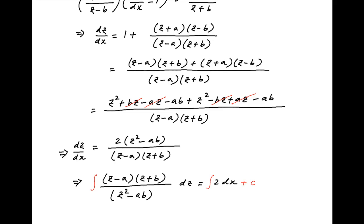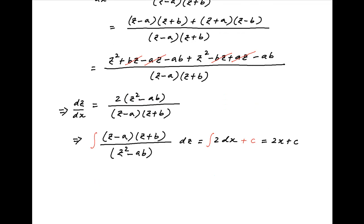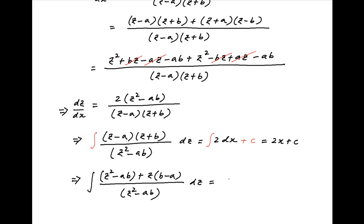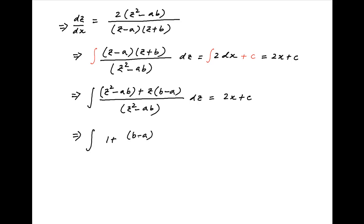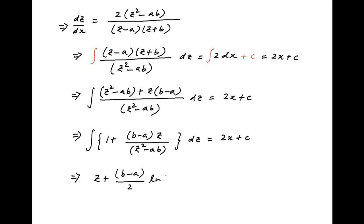Integrating both sides and introducing the constant of integration plus c on the right hand side, the right hand side is equal to 2x plus c. On the left hand side, the numerator in the integrand can be written as z square minus ab plus z times b minus a. Therefore, we get the integral of 1 plus b minus a times z divided by z square minus ab dz is equal to 2x plus c, which implies that z plus b minus a upon 2 times ln of z square minus ab is equal to 2x plus c.